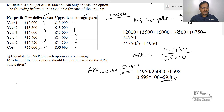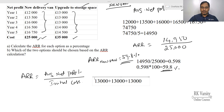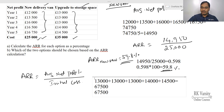Now we calculate for the upgrade of storage space. ARR equals average net profit upon initial cost. The net profits are: £13,000, £13,000, £13,000, £13,000, £14,000, £14,000, and £14,500. The total is £67,500. Dividing by n of 5 years gives an average net profit of £13,500.